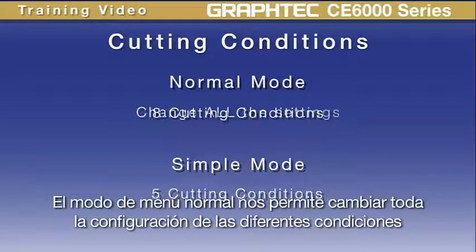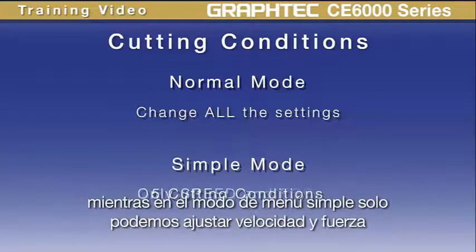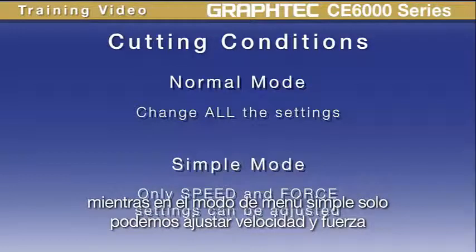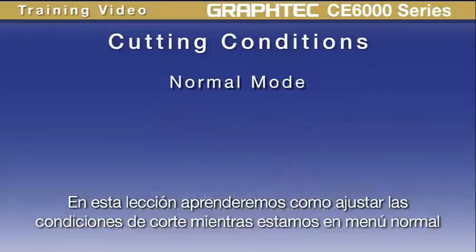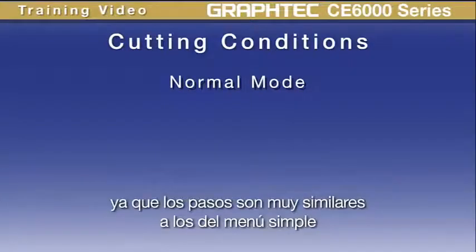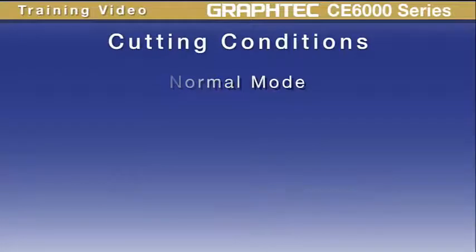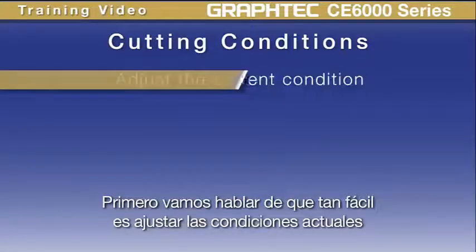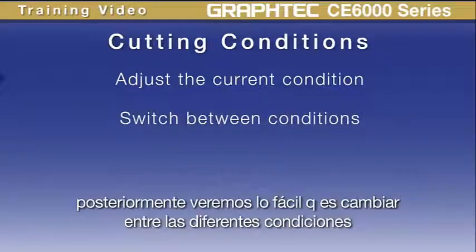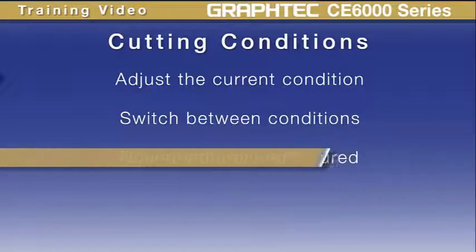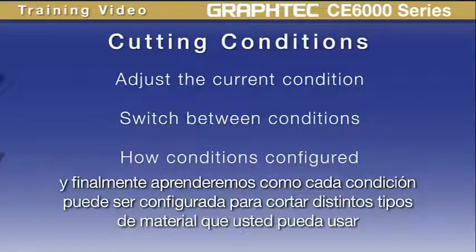The normal menu mode allows us to change all the settings for a condition, whereas the simple menu mode allows for adjusting the speed and force. In this lesson, we'll be covering how to adjust cutting conditions while in the normal menu mode, since the steps are similar in nature to the simple mode. First, we'll cover how to easily adjust the current condition, then we'll cover how to easily switch between conditions, and finally we'll show how each condition can be configured to cut the different types of media you may be using.